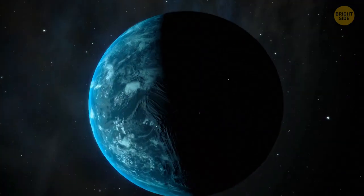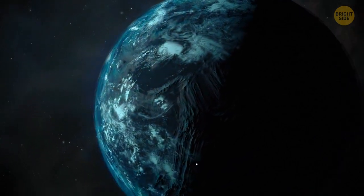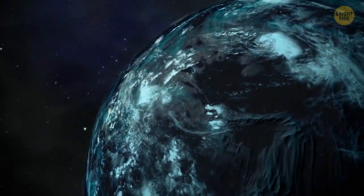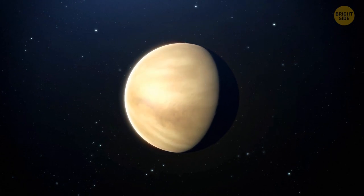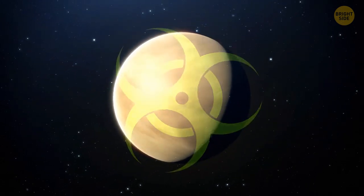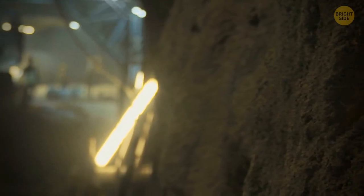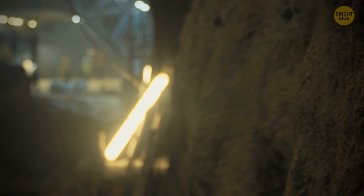But even if, fortunately for us, Kepler-22b turns out to be a rocky planet, we still don't know what the atmosphere is like there. Does it exist at all? What if it turns out to be something like the atmosphere of Venus, which is more toxic than your ex?